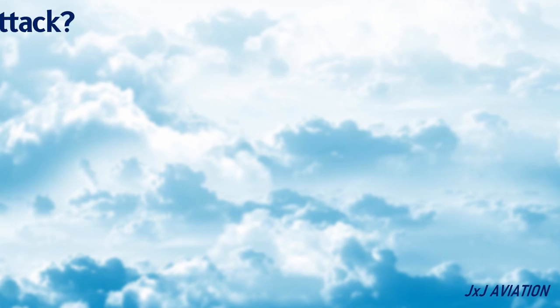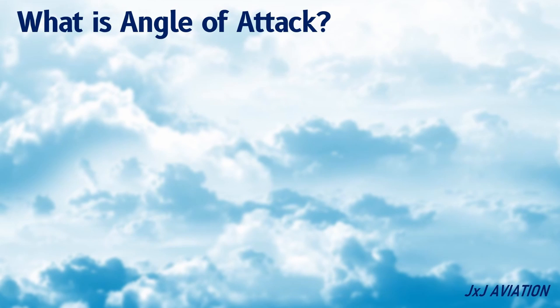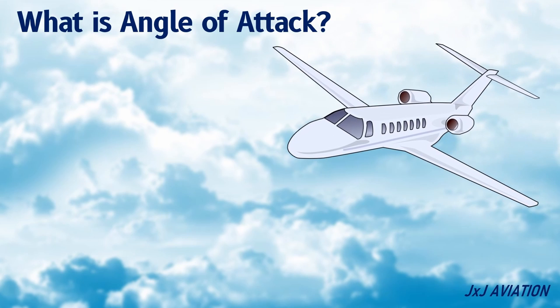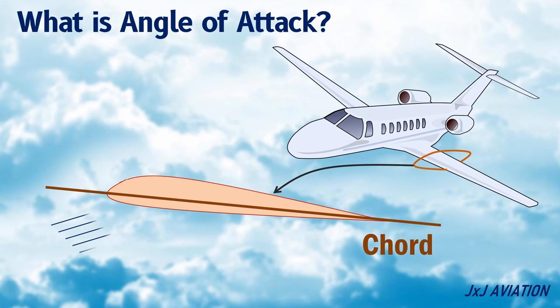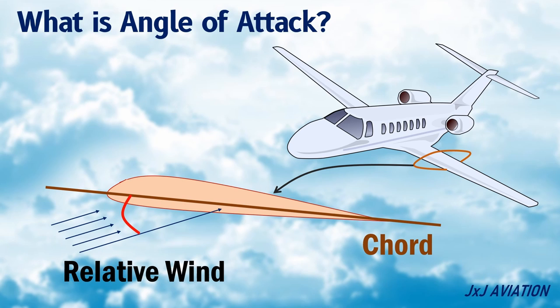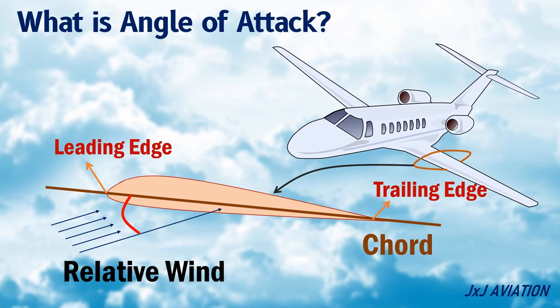What is angle of attack? Angle of attack is defined as the angle between the chord line of an airfoil and the relative wind. The chord line is defined as a straight line joining the leading and trailing edges of an airfoil.